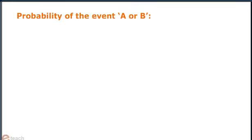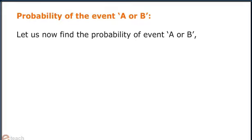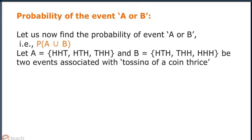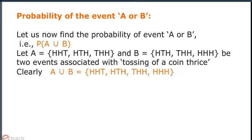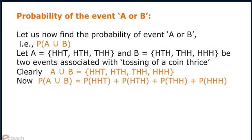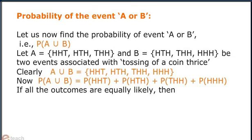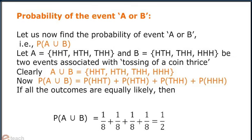Probability of the event A or B. Let us now find the probability of event A or B, that is probability of A union B. Let A and B contain the shown elements, and these be two events associated with tossing of a coin thrice. Clearly, A union B contains the shown elements. Now, probability of A union B can be obtained by adding the probabilities of each element. If all outcomes are equally likely, then probability of A union B will be obtained by adding 1/8 four times, which equals 1/2.